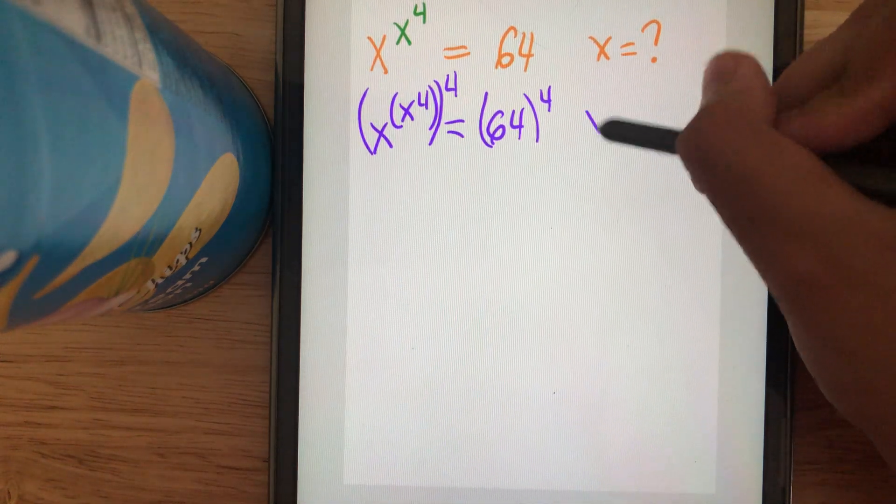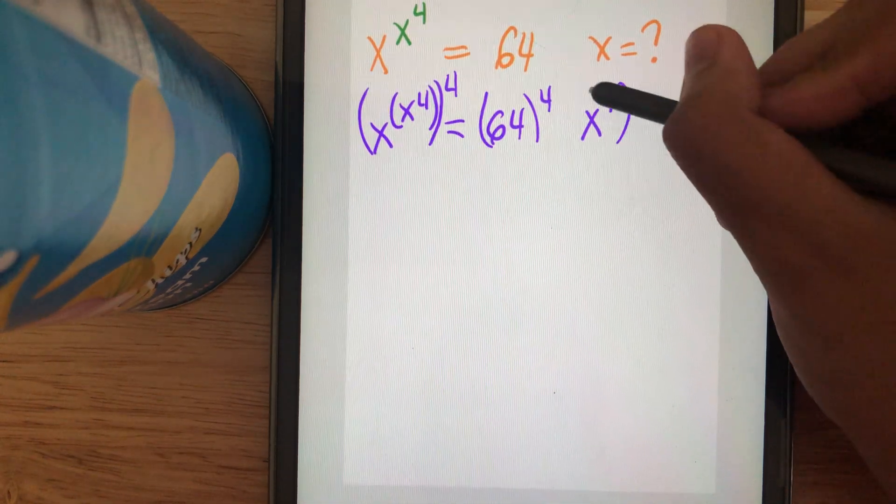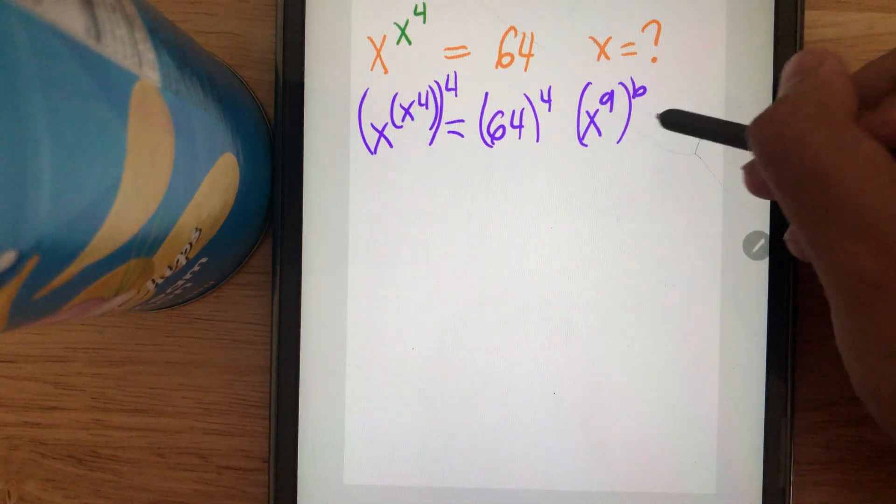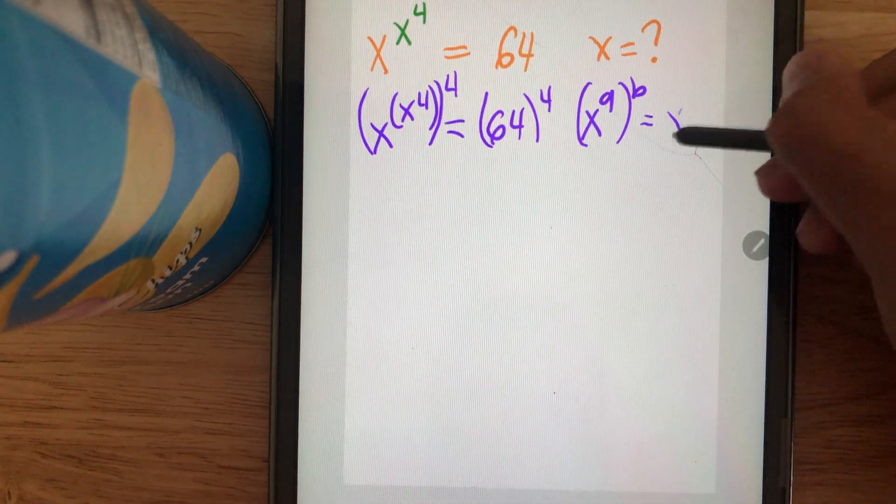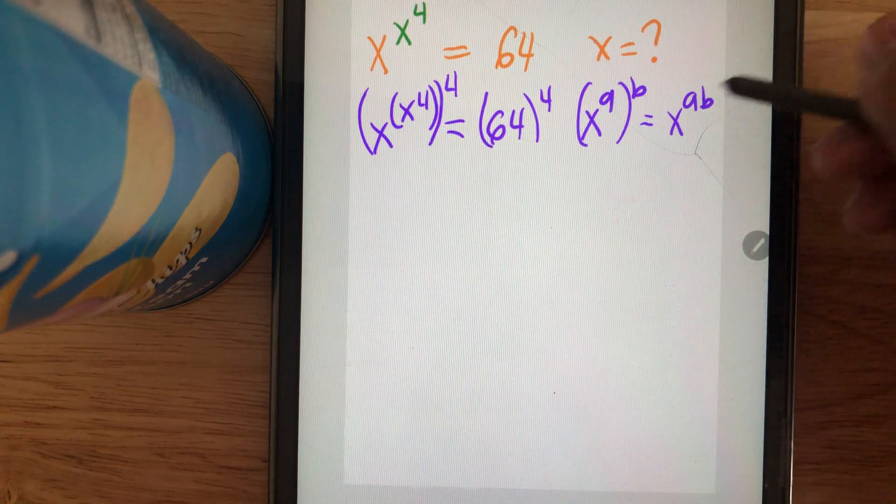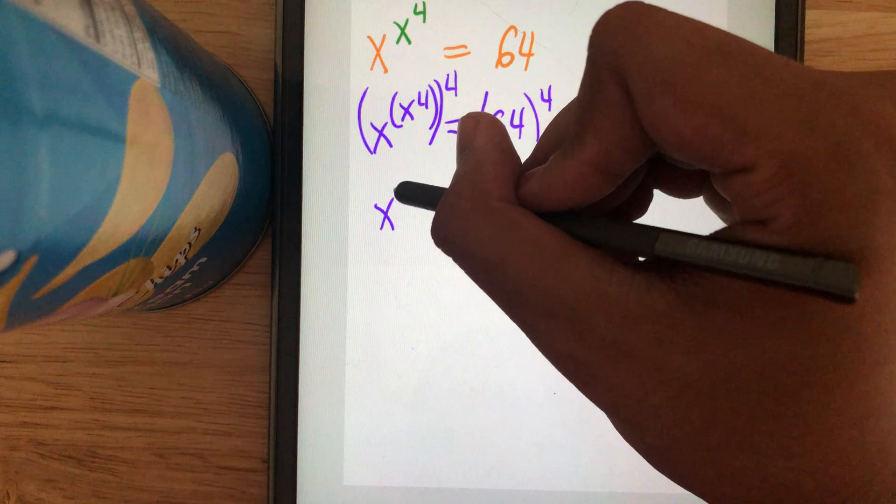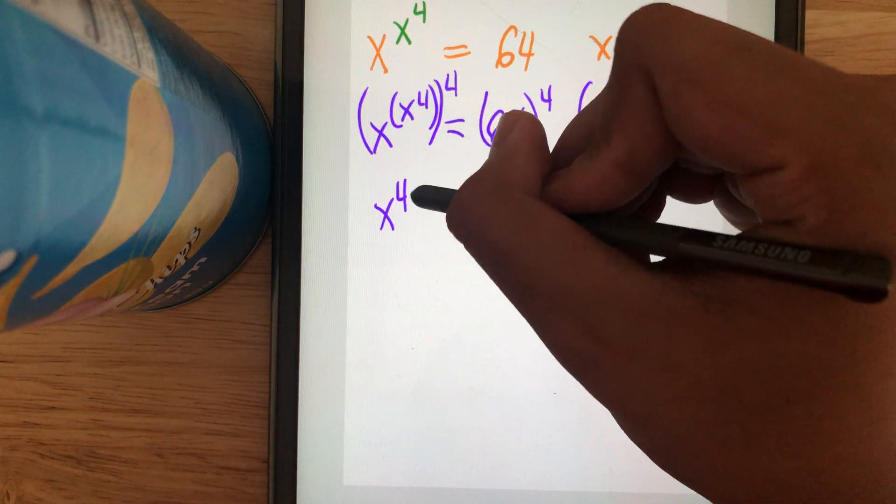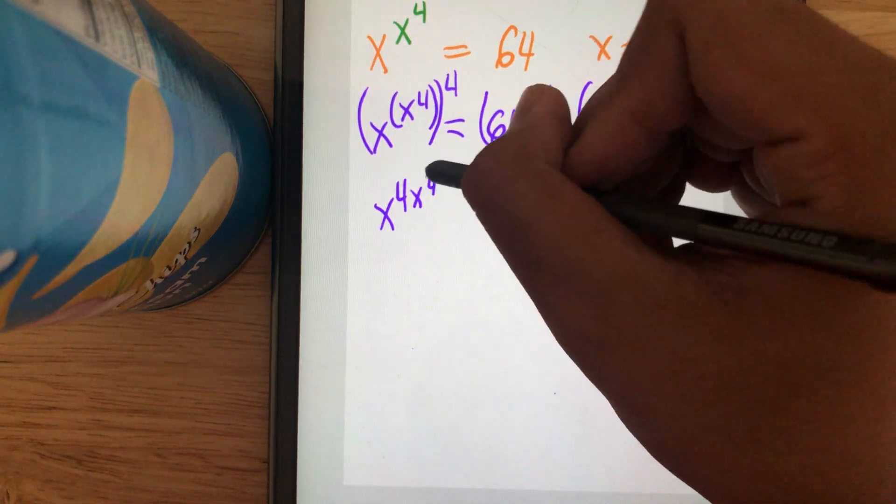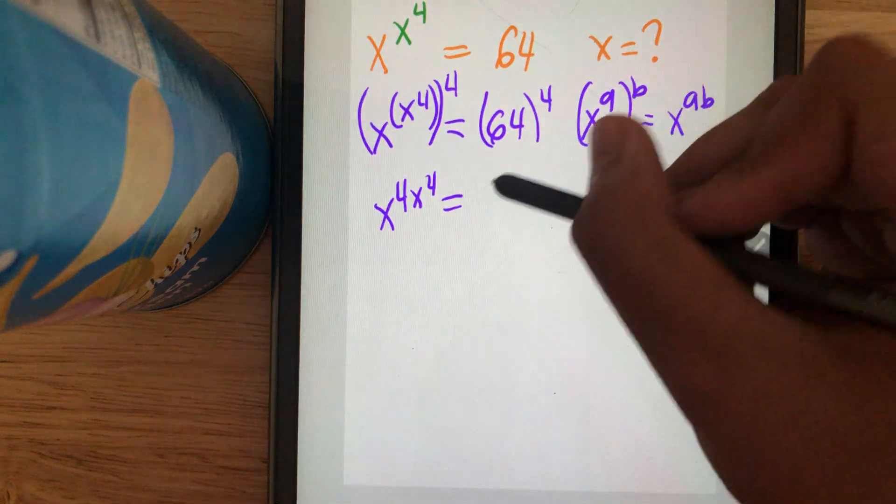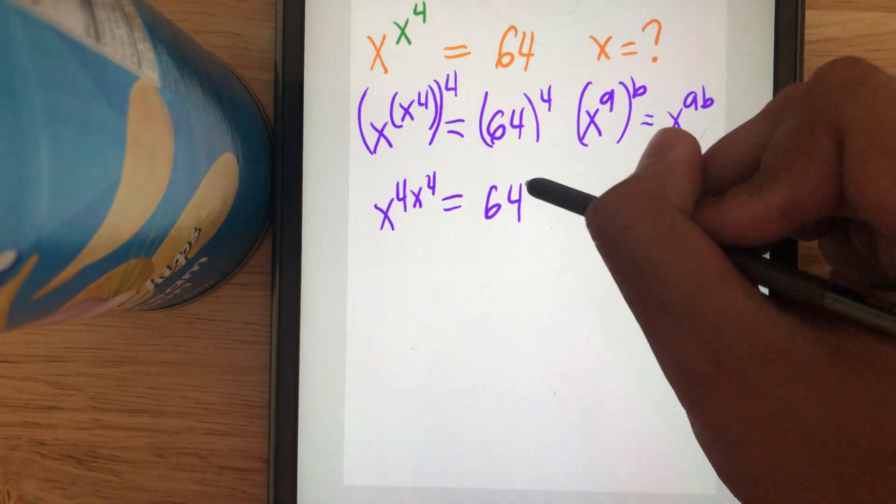Using the power rule (x^a)^b = x^(ab), we can transfer the 4. This becomes (x^4)^(x^4) = 64^4.